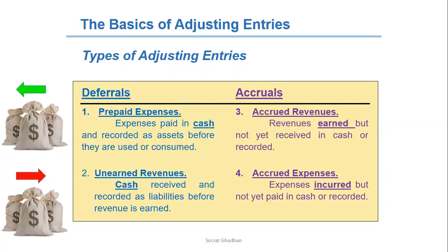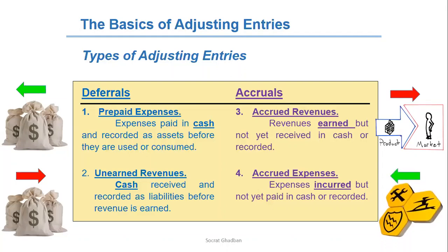The third group is accrued revenues — revenues earned but not yet received in cash or recorded. In this case we will have accounts receivable, which is an asset account. The fourth group is accrued expenses — expenses incurred but not yet paid in cash or recorded. For example, electricity: I'm consuming the electricity, meaning I'm having an expense. However, I will pay in a future period, next month or next year. But it's important to record the entry showing the expense, because expense is recognized when incurred.